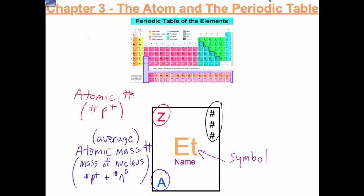Finally, on some periodic tables, you have numbers in the upper right-hand corner. These are your electrons.